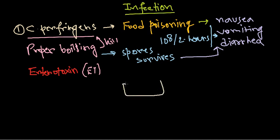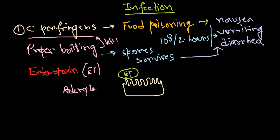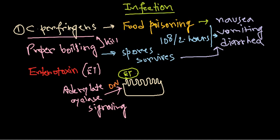If we look at the intestinal cell lining with microvilli, when the enterotoxin comes and binds to it, after the binding it keeps the cell in an active state via adenylate cyclase signaling. This adenylate cyclase signaling is kept on throughout the time.